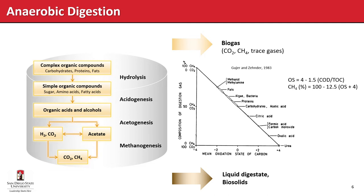Coming out of anaerobic digestion is a biogas mixture of CO2, methane, and trace gases, plus a liquid digestate containing some biosolids. Based on the mean oxidation state of the carbon entering the system as complex organic compounds, we can determine what percentage of methane and CO2 we will get out. We can predict this oxidation state from CO2 and total organic carbon values, and use the resulting equation to estimate the percentage of methane produced.